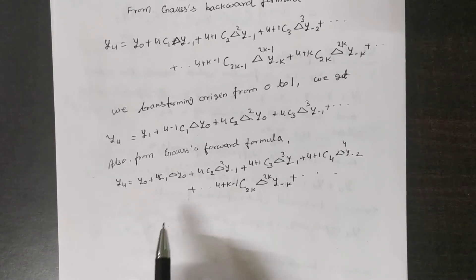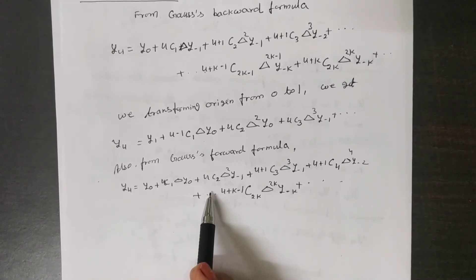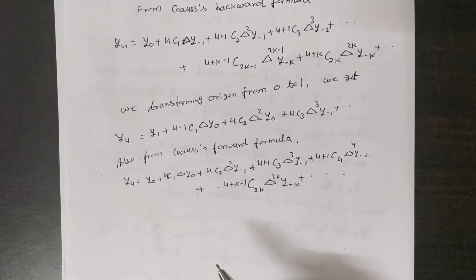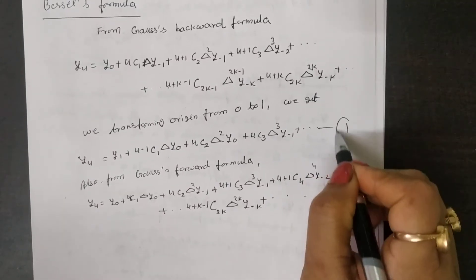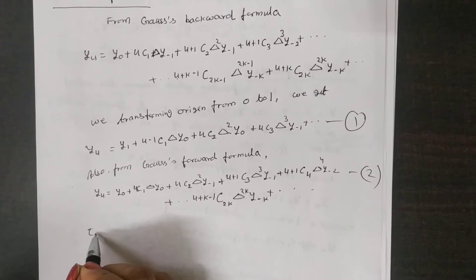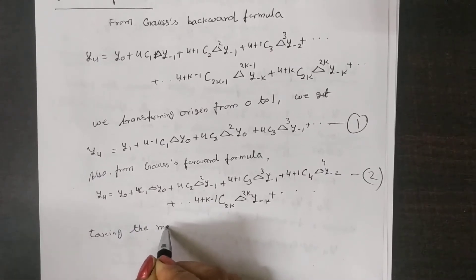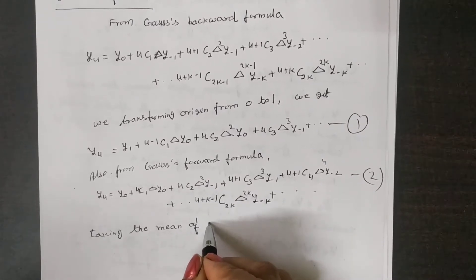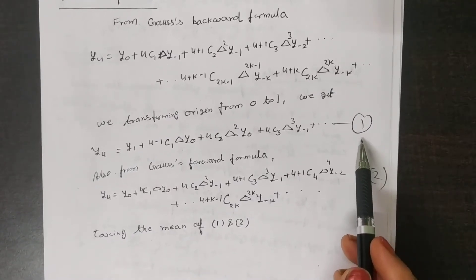This is the Gauss forward formula. For the Bessel formula, we are taking the mean of equation number 1 and equation number 2 — that is, the mean of the Gauss forward interpolation formula and the Gauss backward interpolation formula.